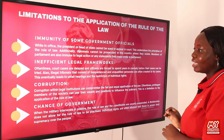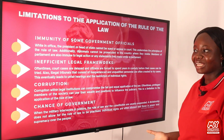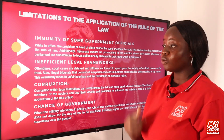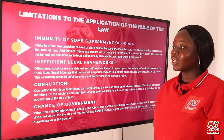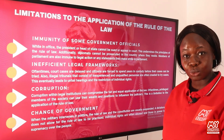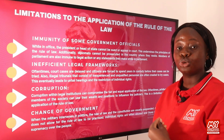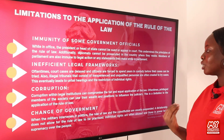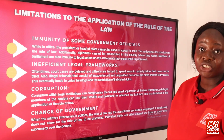Another limitation is an inefficient legal framework. Court cases are often delayed and citizens are forced to spend years in custody before their cases can be tried. Illegal tribunals consisting of inexperienced and unqualified personnel are sometimes created to try cases, leading to unfair hearings and restriction of individual rights. We also have corruption: corrupt practices within legal institutions can compromise the fair and equal application of the rule of law, as privileged members of society can use their wealth and positions to influence the judiciary.